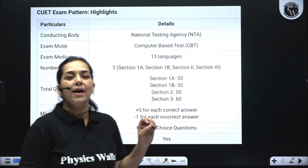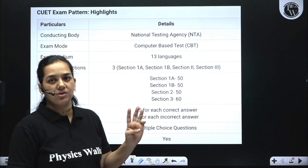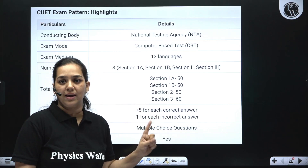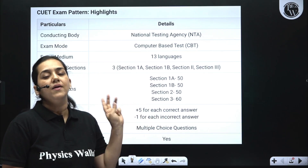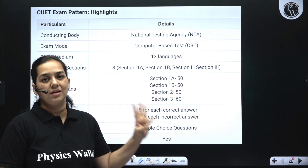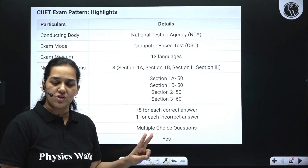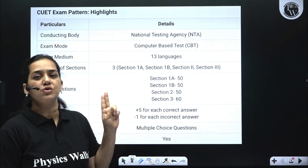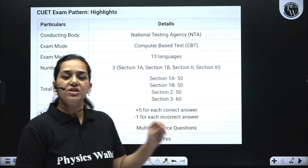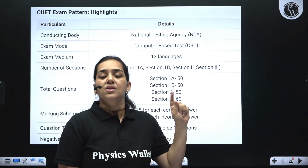You have 3 sections: Section 1A, 1B, 2 and 3. Section 1A and 1B are language specific and you can choose which language.